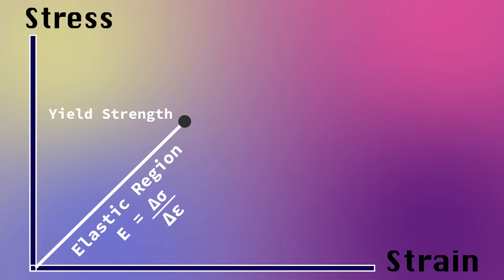Stress and strain are related by a constant known as Young's modulus, which is the slope of the linear region. Young's modulus can give you an exact relationship between any value of stress and strain, allowing you to plan how much strain is allowed for the applied force.